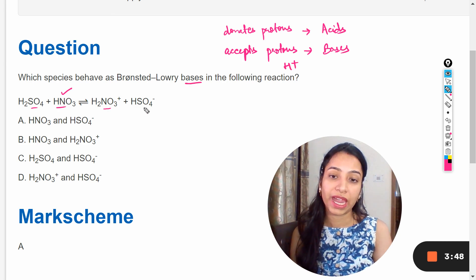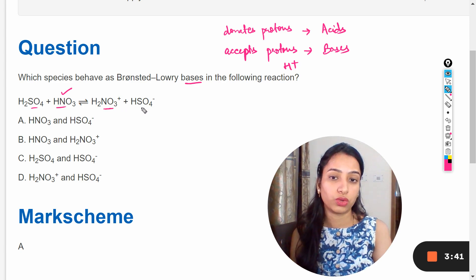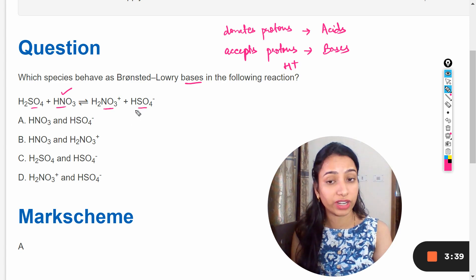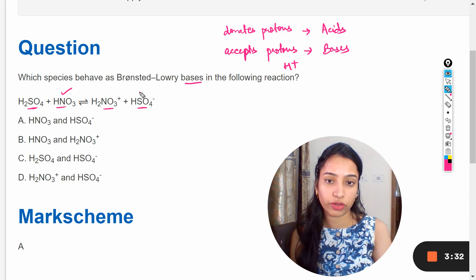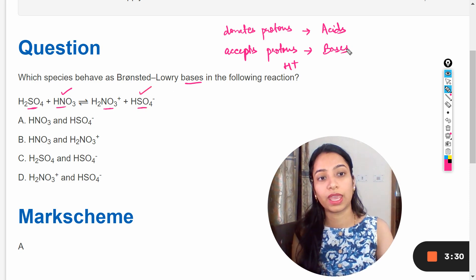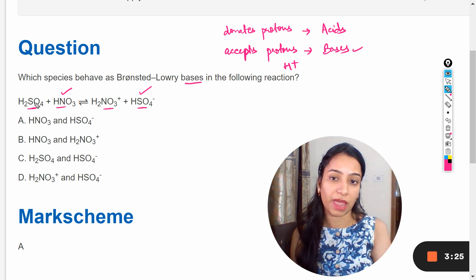And if we consider the backward reaction, this H2NO3 positive gives its proton to HSO4 negative and after accepting proton HSO4 negative converts to H2SO4. Means in the backward reaction this HSO4 negative accepts the proton and this will be the Brønsted-Lowry base in the backward reaction.